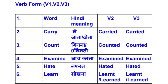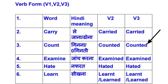Next word form है COUNT — C-O-U-N-T. Count मतलब होता है गिनना या फिर गिन्ती। इसका V2 हो जाएगा Counted — C-O-U-N-T-E-D, और V3 भी Counted होगा।